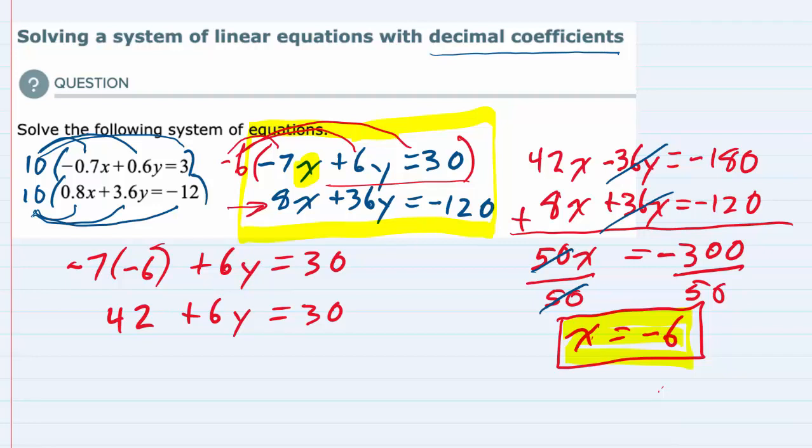And then to solve for y we would first subtract the 42 over. So we're subtracting it from both sides. It cancels on the left, leaving just 6y equals 30 minus 42, which is -12.